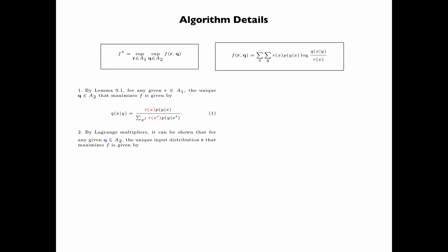We will show in a moment by Lagrange multipliers that for any given Q in A2, the unique input distribution R that maximizes F is given by Rx equals the product over all y, Q(x given y) to the power P(y given x).